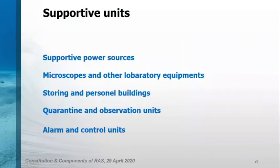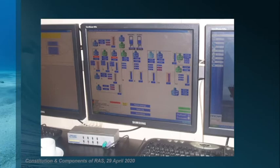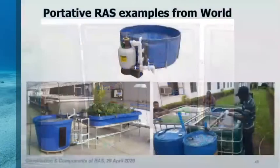You can also have some supportive units such as power sources, microscopes and other laboratory equipment, storage and personnel buildings, quarantine and observation units, and alarm and control units. In this photo you can see a simple remote control unit. A researcher can control all of the water quality changes in this system with probes.